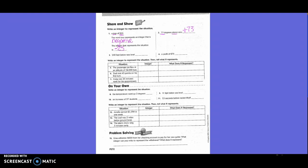Number three: 200 feet below sea level. I'm going to underline 200 and below. So what is that? Negative 200. A profit of $76. Profit and 76. Negative or positive? Positive 76.